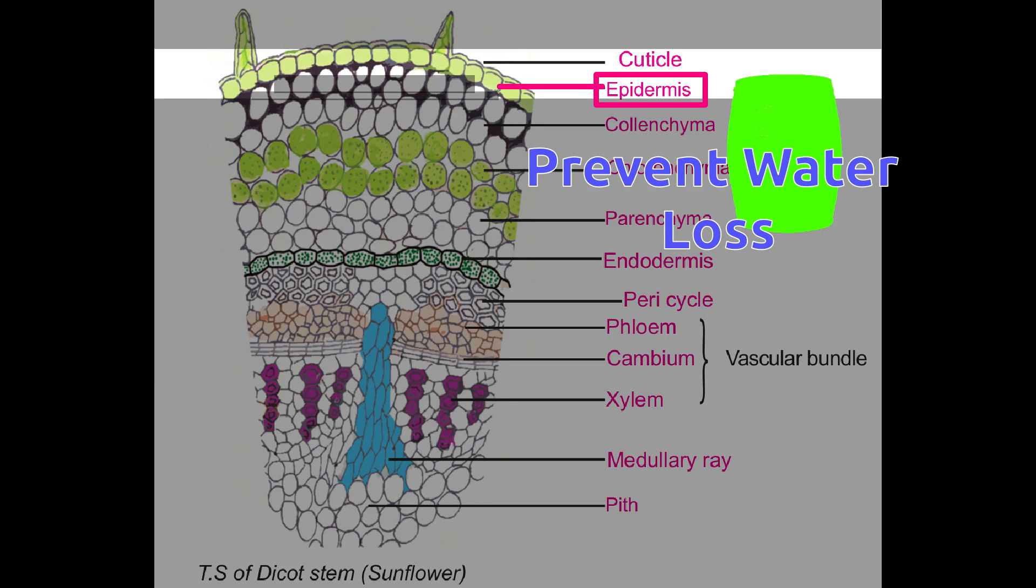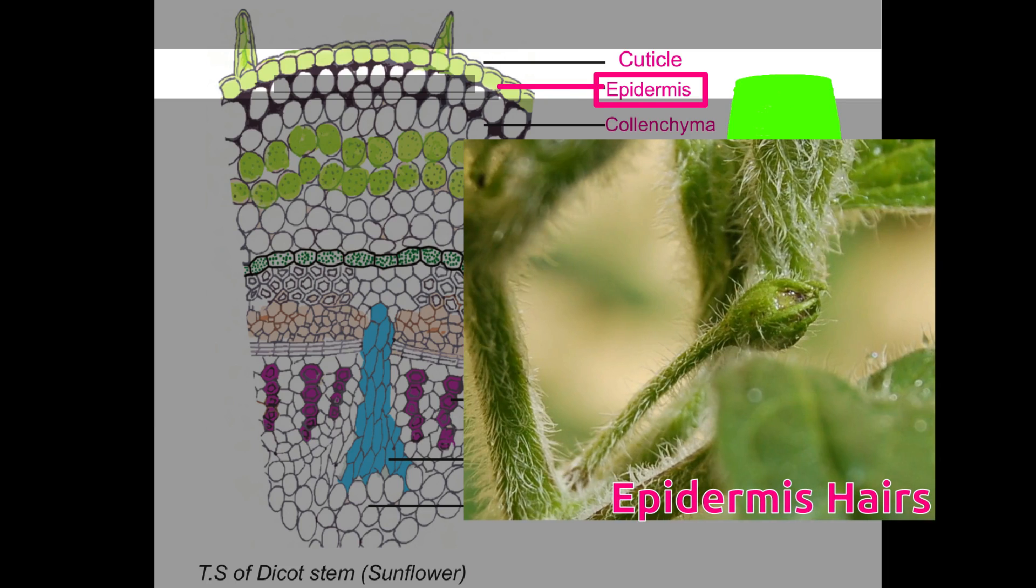Epidermis are barrel-shaped cells. It gives protection against water loss and produces multicellular epidermal hairs. These hairs protect the plant from insects.